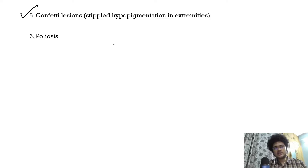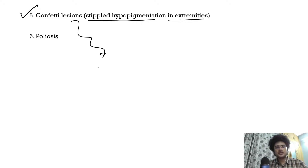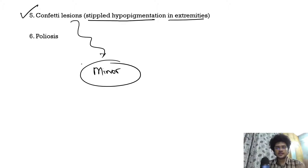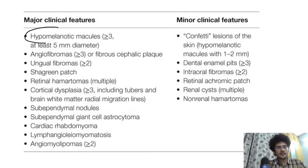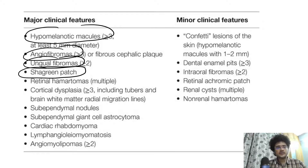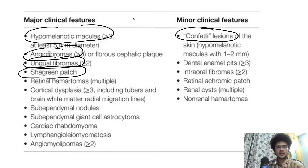Confetti lesions are stippled hypopigmented lesions present in the extremities. An important point: confetti lesions are a minor diagnostic criterion. Ash leaf macules, adenoma sebaceum, ungual fibromas, and shagreen patch are all major diagnostic criteria. Confetti lesions are the only cutaneous manifestation that is a minor diagnostic criterion — an important MCQ point.